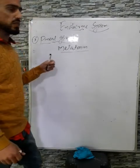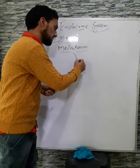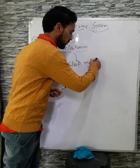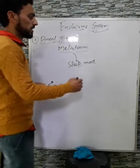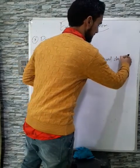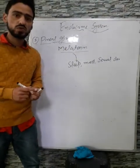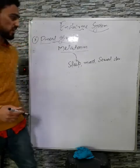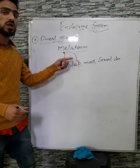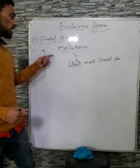The pineal gland secretes a single hormone known as melatonin. Melatonin regulates various functions: it controls our sleep, controls our mood, and also regulates sexual development and the time of puberty. Melatonin is secreted more during the night and darkness compared to the day — that is why this hormone helps us to fall asleep.